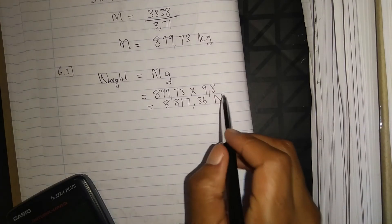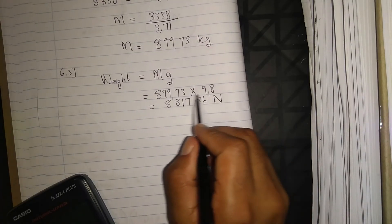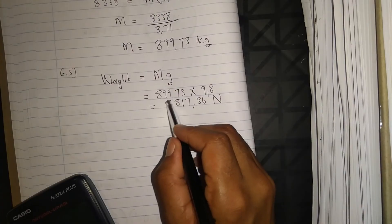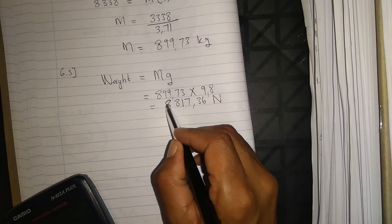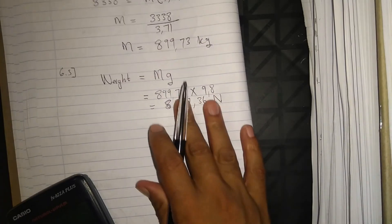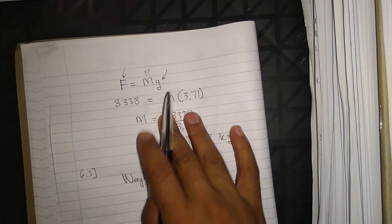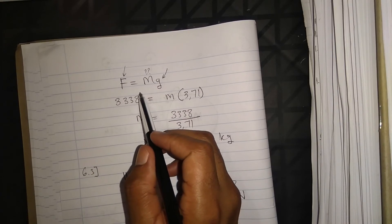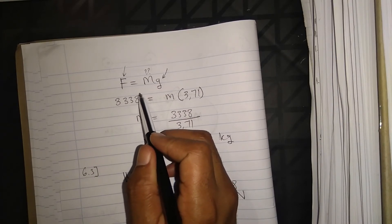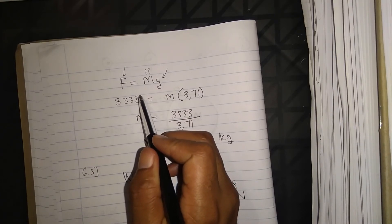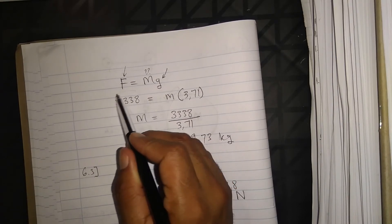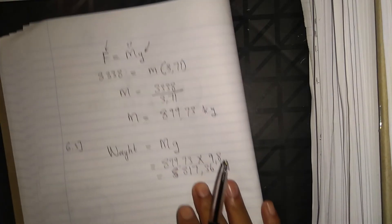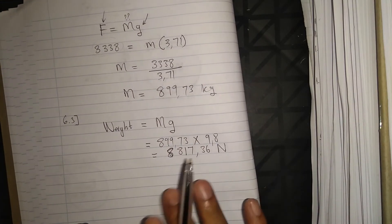So on planet Earth the probe weighs about 8,000 Newtons, while on planet Mars the gravitational force on the probe is just over 3,000 Newtons. This confirms that planet Earth is bigger than planet Mars, which is why Earth has a stronger gravitational acceleration.